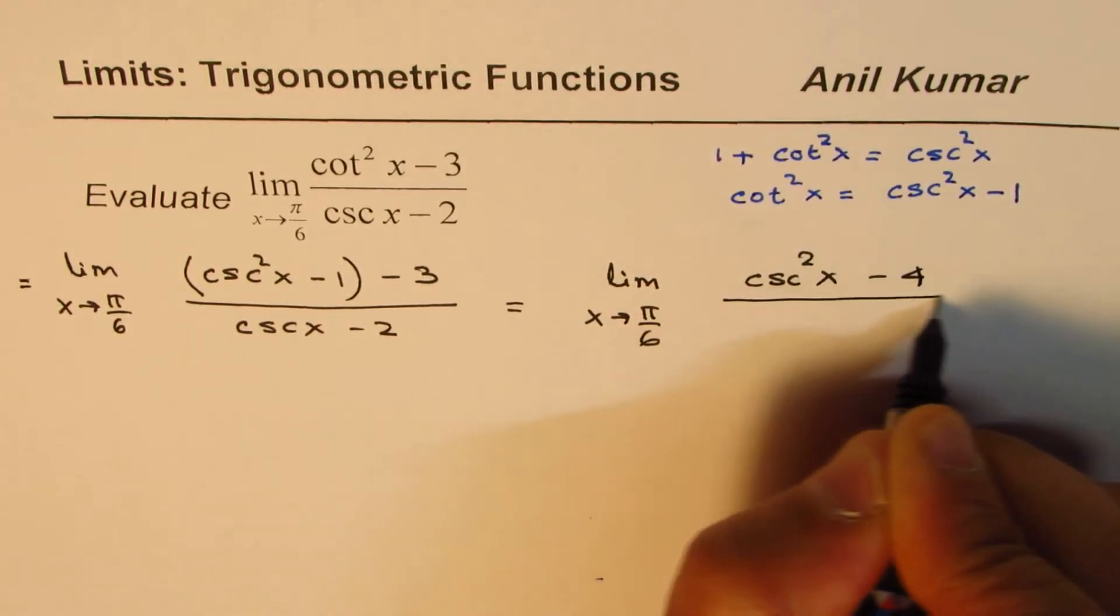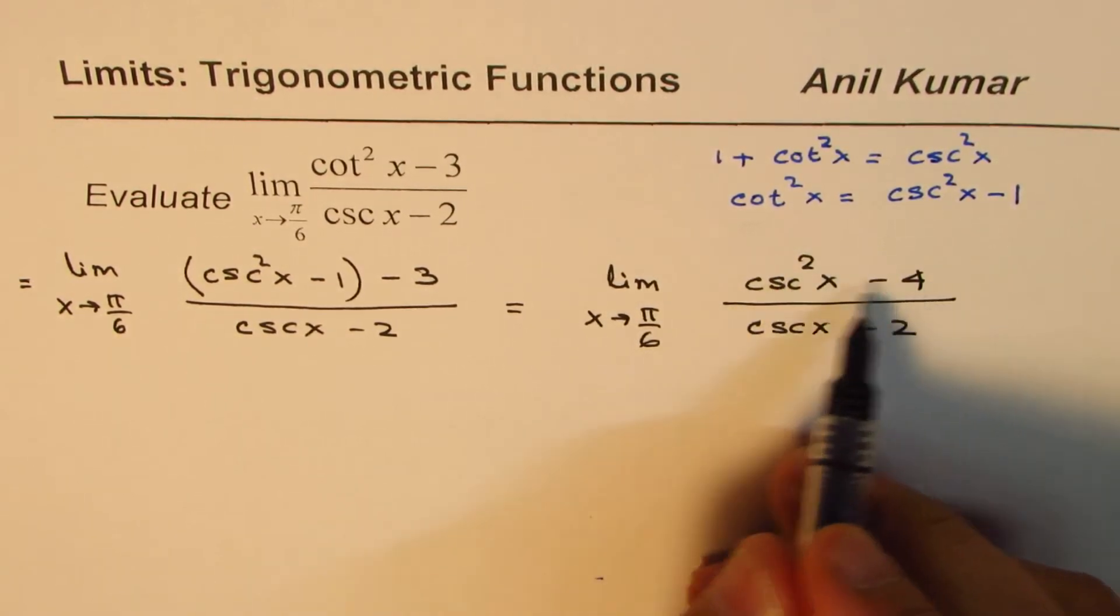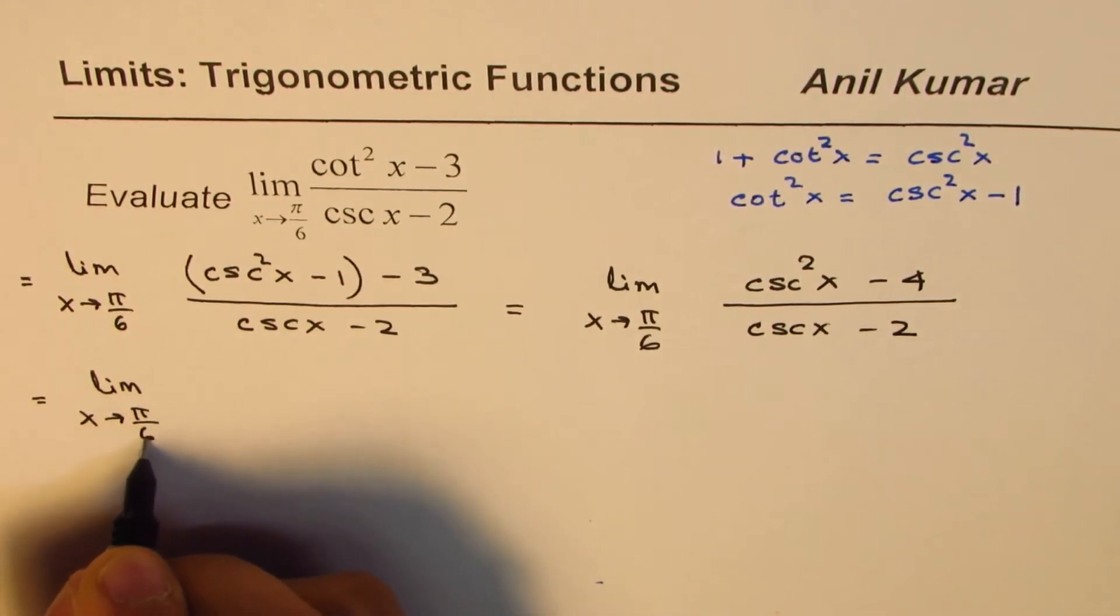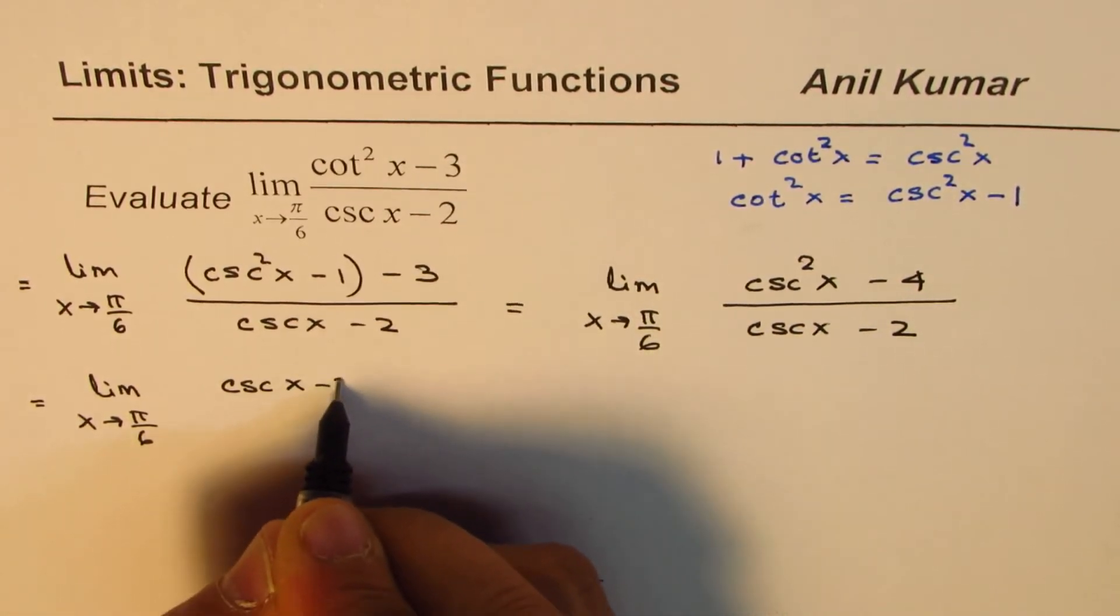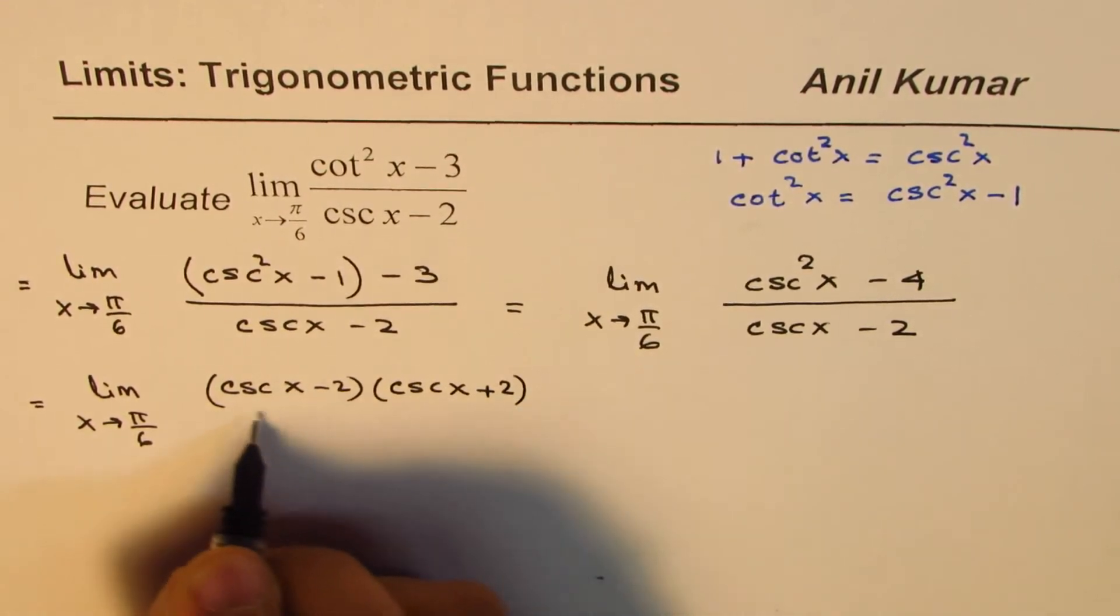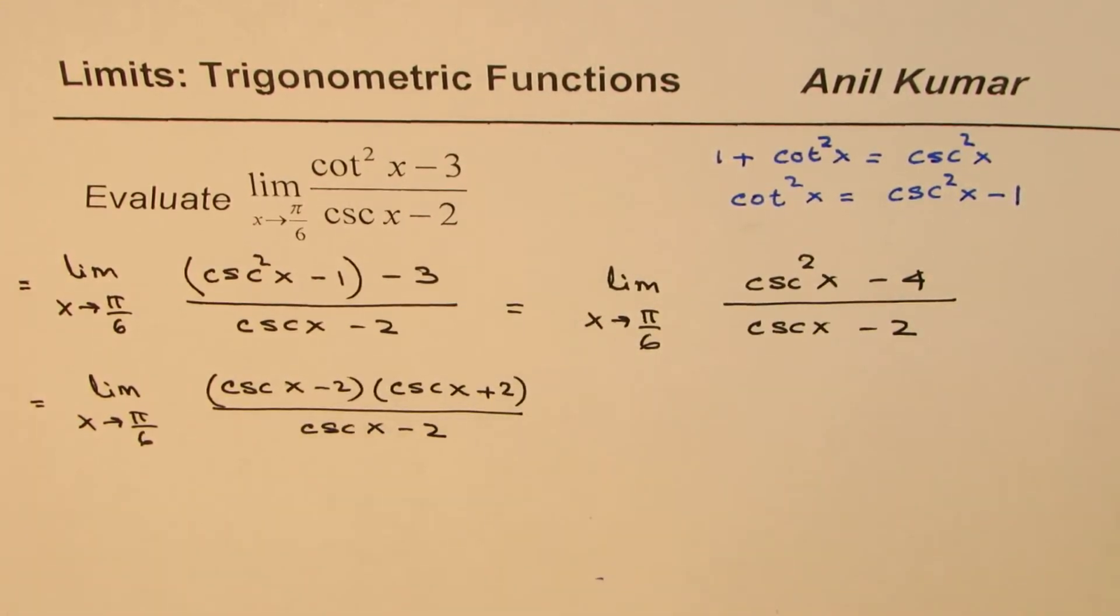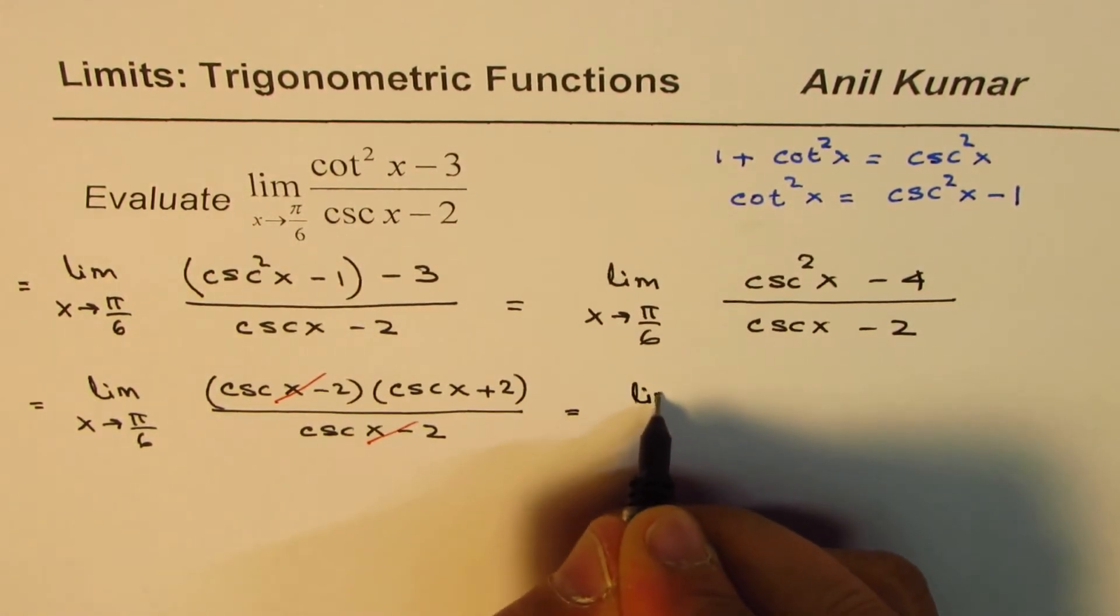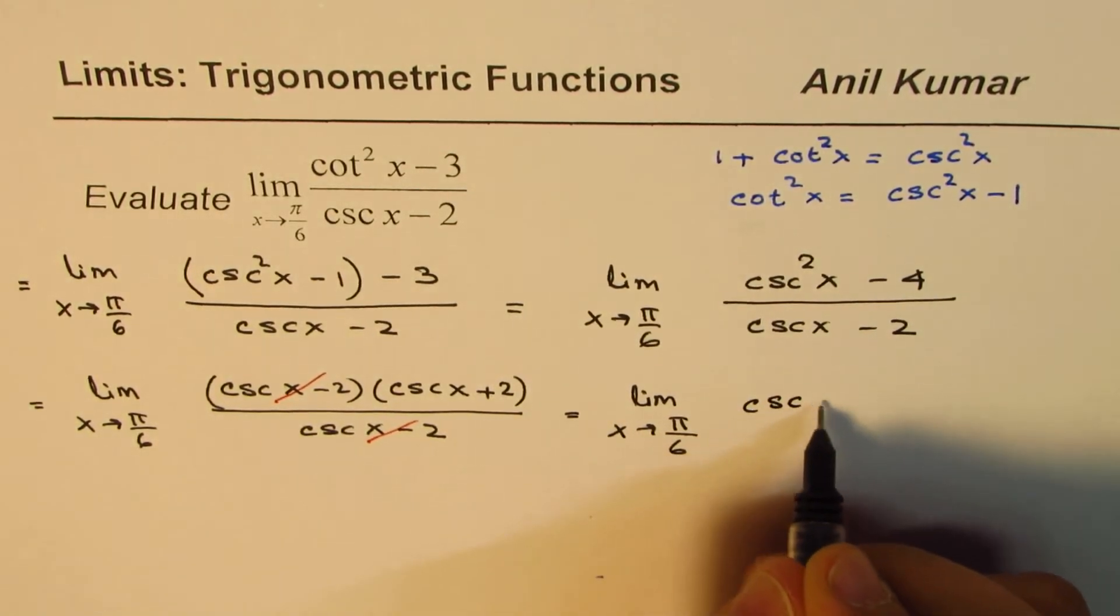Now we could apply difference of squares here. So we get limit x approaches π/6 of (csc x - 2)(csc x + 2) divided by (csc x - 2). These factors cancel out, so you could write this as limit x approaches π/6 of csc x + 2.